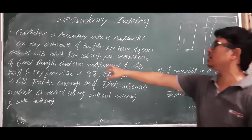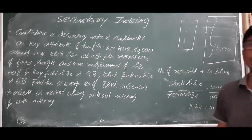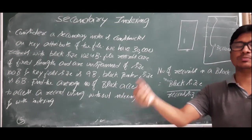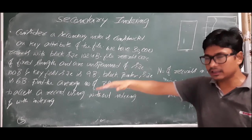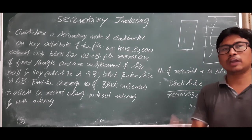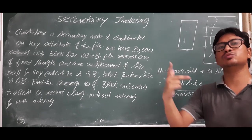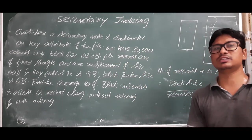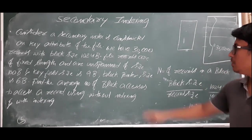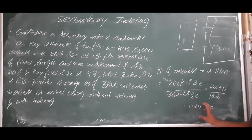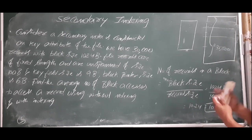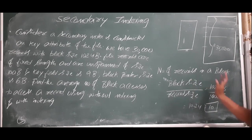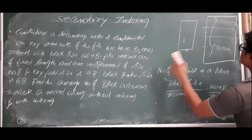We take only 10 records because the problem clearly mentions the unspanned technique. In unspanned, even if some memory is left, we will not keep a record spanning into the next block — unlike spanned where we use that leftover space. So we can only keep 10 records per block, wasting a little memory.